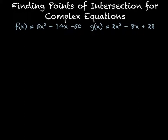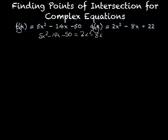The key thing here is to remember how to factor — remember back to when you learned how to factor quadratic equations. The first thing we're going to do is recognize that we have two different equations both set equal to y. So instead of writing f(x) or g(x), we write y. Since they're both equal to y, we can use substitution and set them equal to each other: 5x² − 14x − 50 = 2x² − 8x + 22.